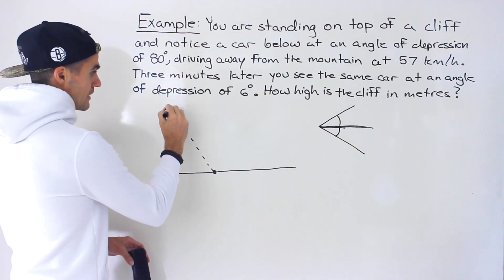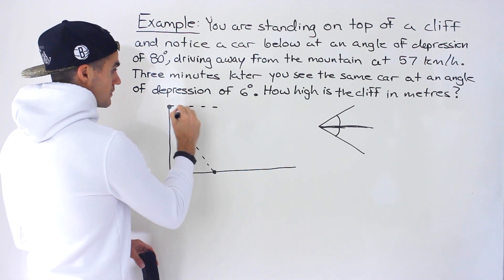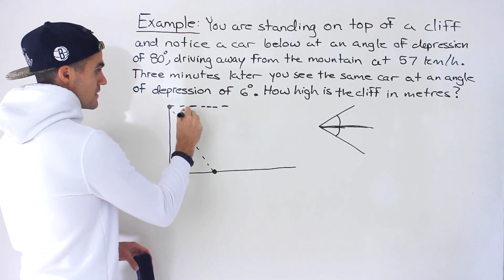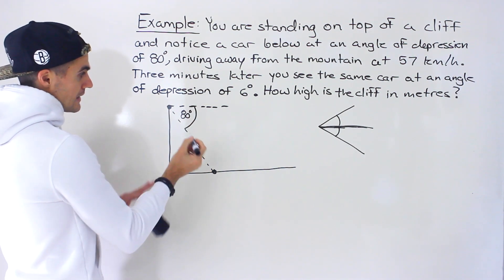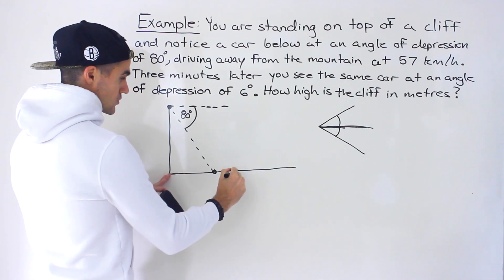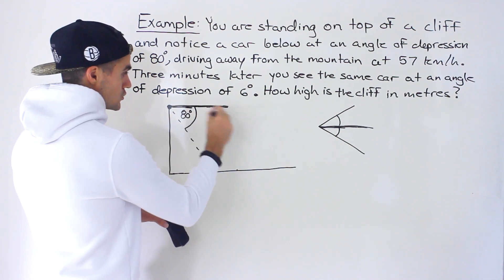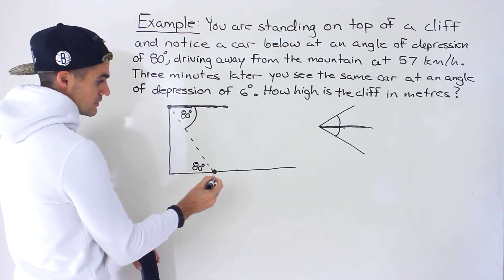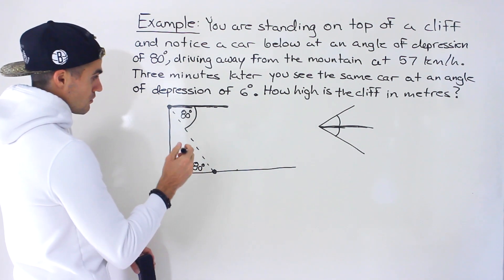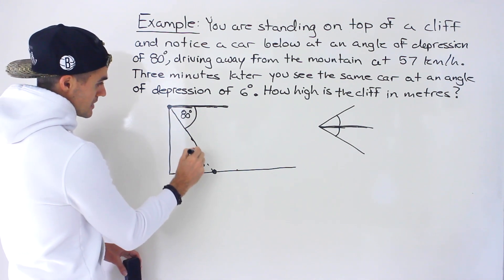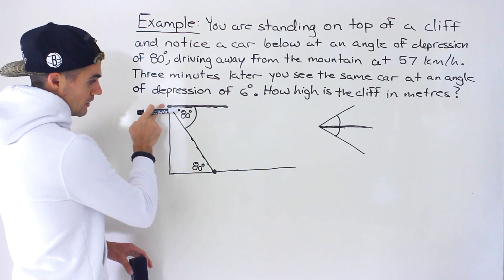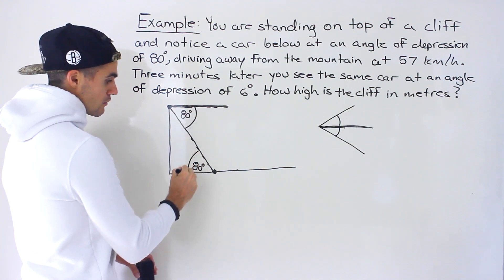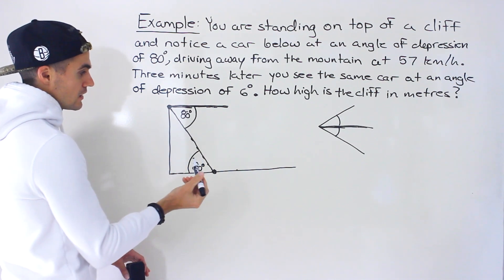So relative to this horizontal line, if you're looking at the car at an angle of depression of 80 degrees, this here is the 80 degrees. Now with the z-pattern, because the road is horizontal and this is a horizontal line drawn for reference, both of those are parallel. So by the z-pattern, this angle here is also 80 degrees. This angle and this angle are the same.